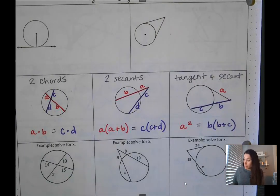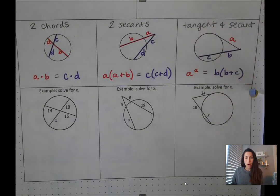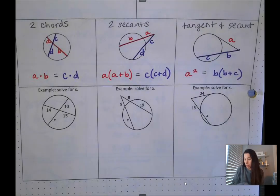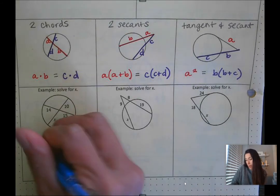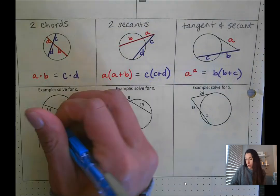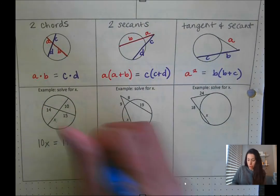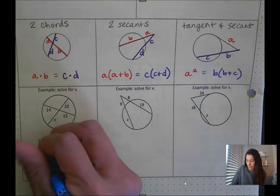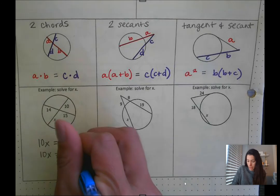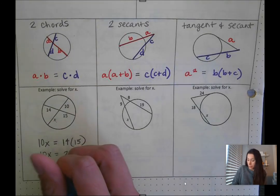Now let's use these formulas and we're actually going to solve for the variables in each diagram. We have the product of one chord, so 10 times X. We can set that up as 10X equals 14 times 15. This would give us 10X equaling 210. If we divide by 10 on both sides we're going to get X equals 21.